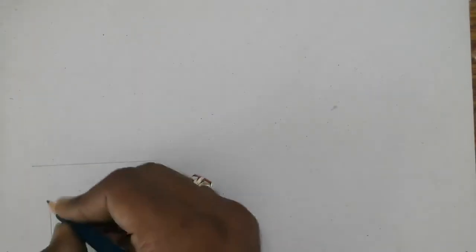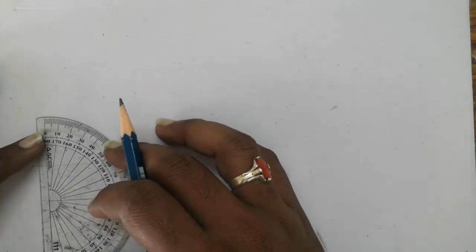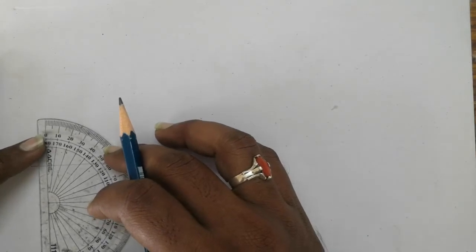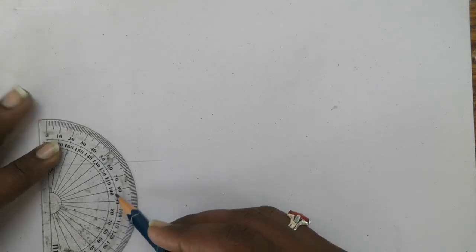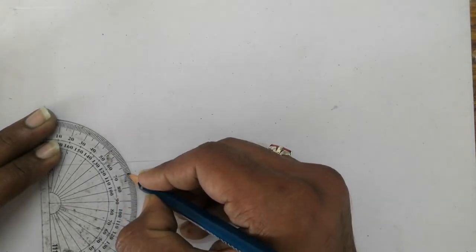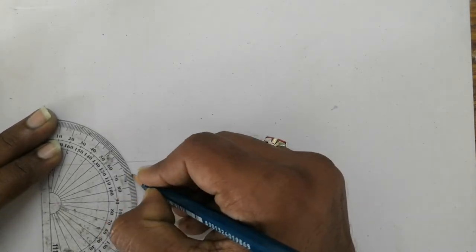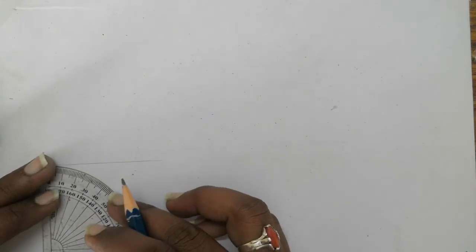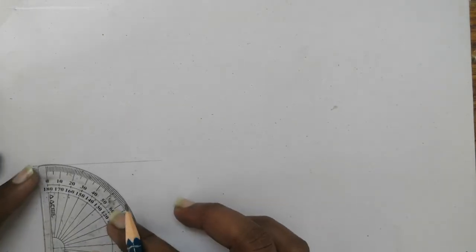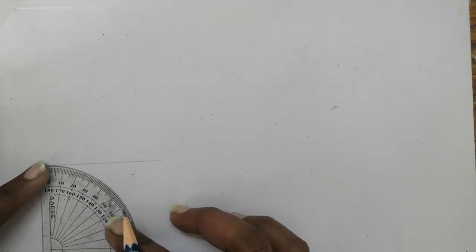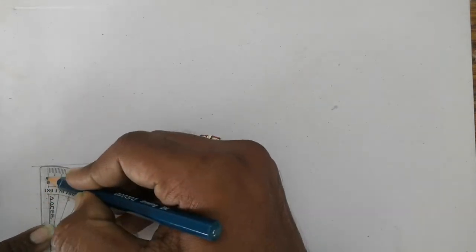Now from this point you have to mark 108 degrees on both sides because the internal angle of a regular pentagon is 108 degrees. 0, 90, 100, 110. So this is your 108 on this side. From here also, 0, 90, 110 and 108.